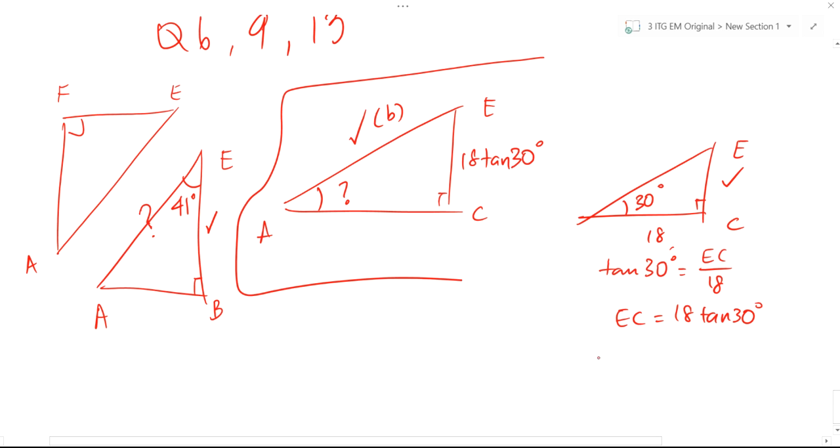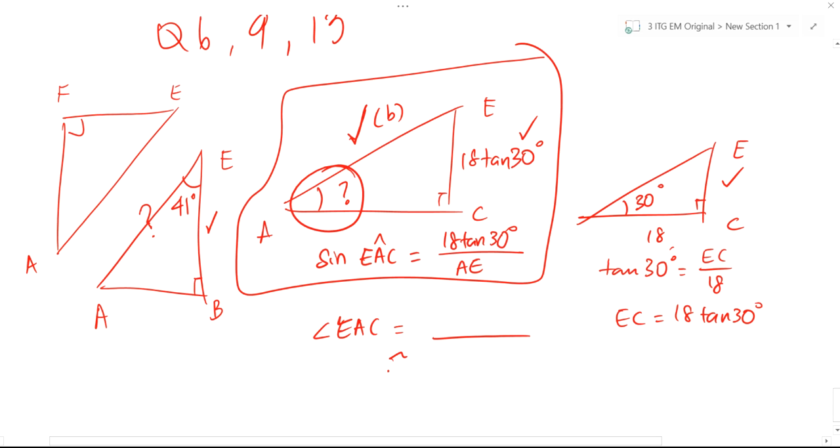So now back to this triangle. I've got one side. I've got another side. To find an angle, all I need to use is sine. Sine E, A, C equals to 18 tangent 30 degrees divided by your answer in part B which is AE. So E, A, C equals to, round off, how much? 22.2.